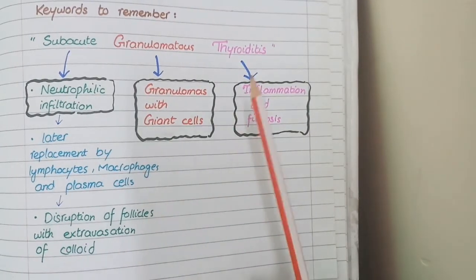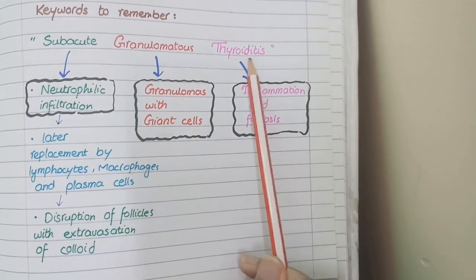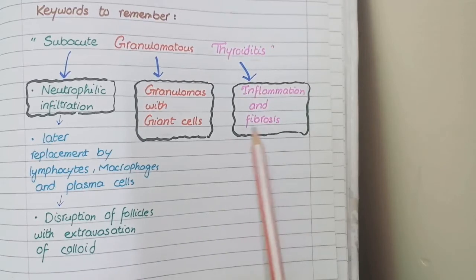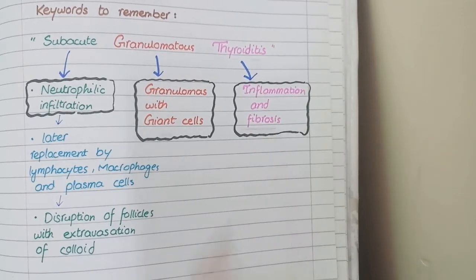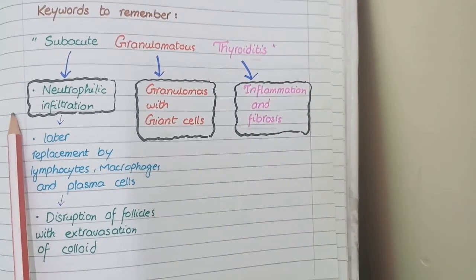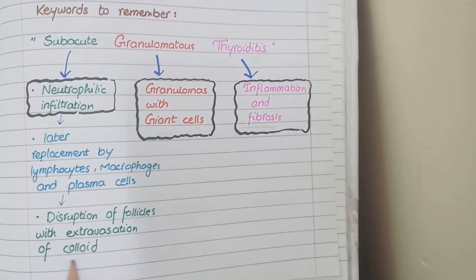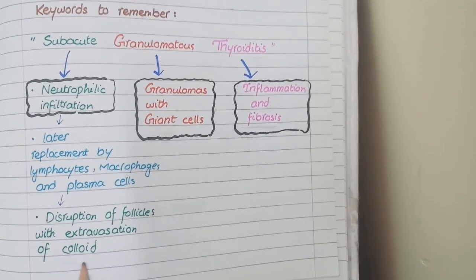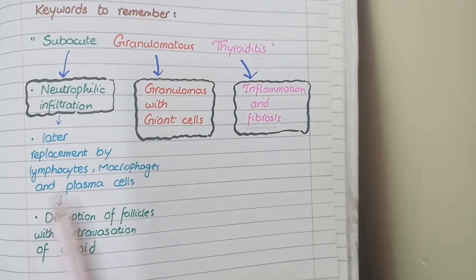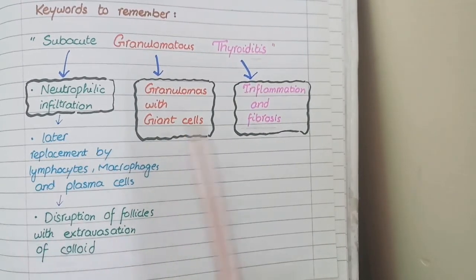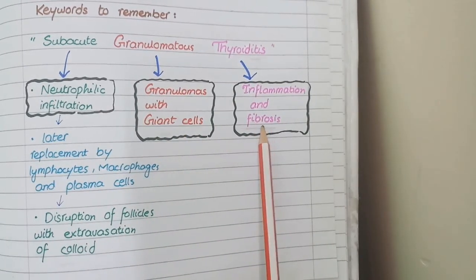The third keyword is 'thyroiditis' — as '-itis' stands for inflammation, there are elements of inflammation and fibrosis. Overall on microscopy you see neutrophilic infiltrates gradually replaced by chronic inflammatory cells, disruption of follicles with extravasation of colloid, granulomatous inflammation with giant cells, and some areas of fibrosis.